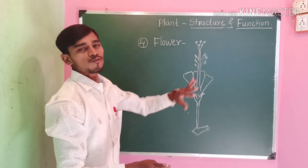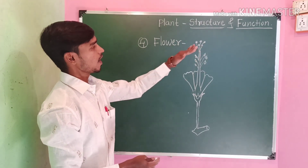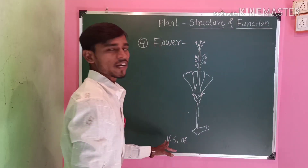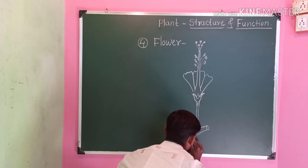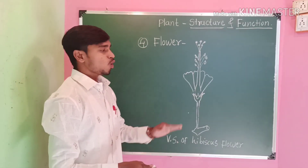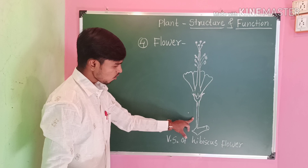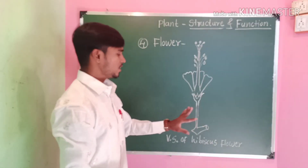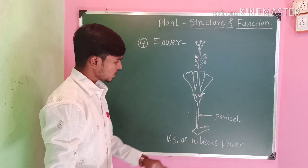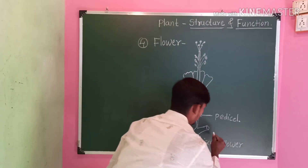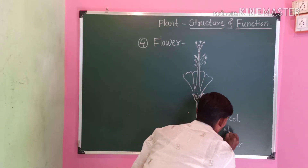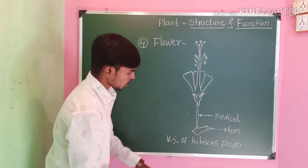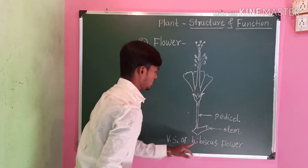Flower. This is the colorful, attractive part of the plant. This is a vertical section of a hibiscus flower. The flower may have a long or short stalk called the pedicel. One end of the pedicel is attached to the stem.